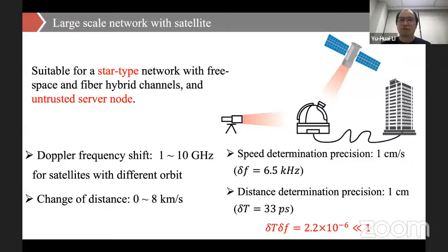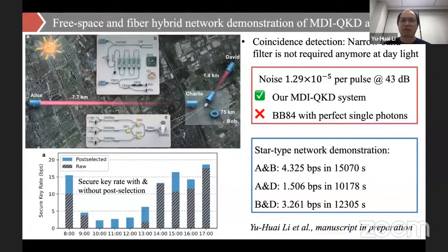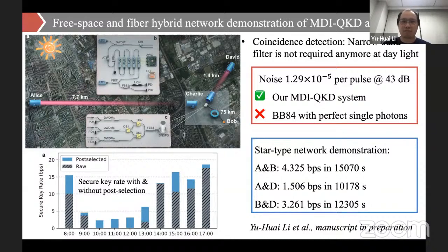With laser ranging techniques, the determination of distance can achieve a precision of about one centimeter, corresponding to a time precision of 30 picoseconds. The determination of speed can also achieve one centimeter per second, corresponding to a frequency shift of 6.5 kHz. The product of delta-T and delta-F is far below one, so this accuracy is enough for high-visibility Hong-Ou-Mandel interference. Recently we performed a free space and fiber hybrid network demonstration of MDI-QKD at daylight, constructing two free space channels and a fiber channel, demonstrating that a security key can be extracted even with high background noise.